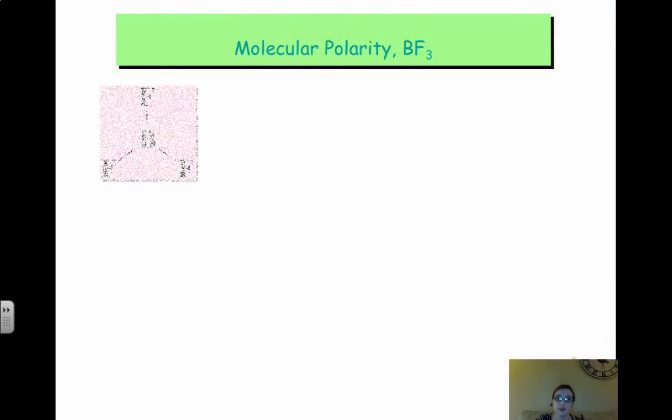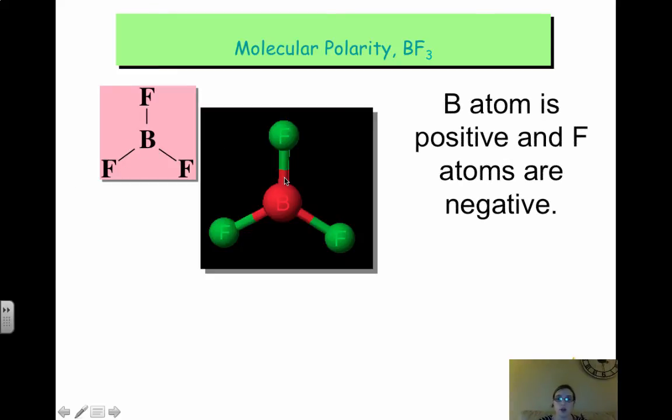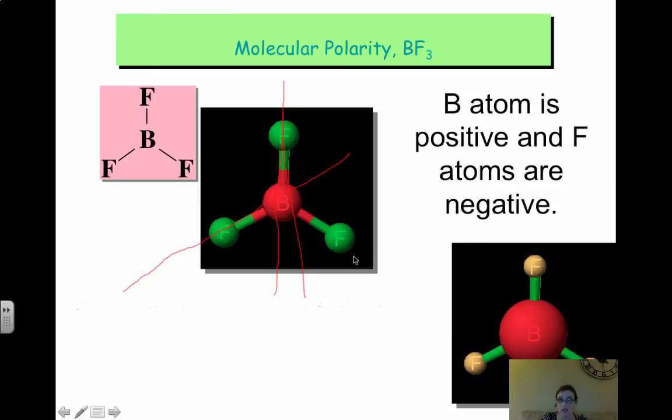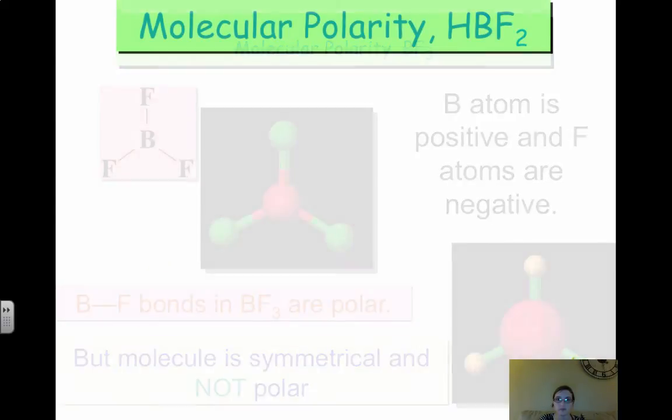Then looking at BF3. So we have BF3 here. So our boron atom is positive, our F is negative. Anything with fluorine will be polar. But what we have to look at now is, let's see if it's symmetric. So if I draw a line straight down, the question is, could you fold this left side on to the right? Or if I draw a line this way, can I fold the top onto the bottom? And the answer is yes. So even though the BF3 bonds are polar, the molecule is symmetric, so it's not polar.